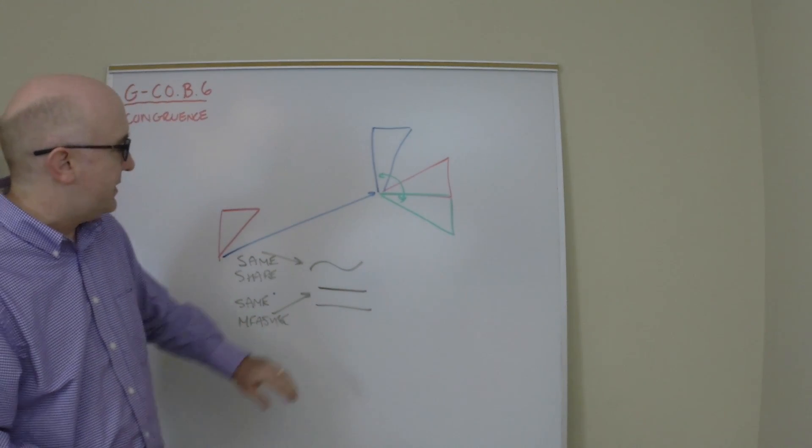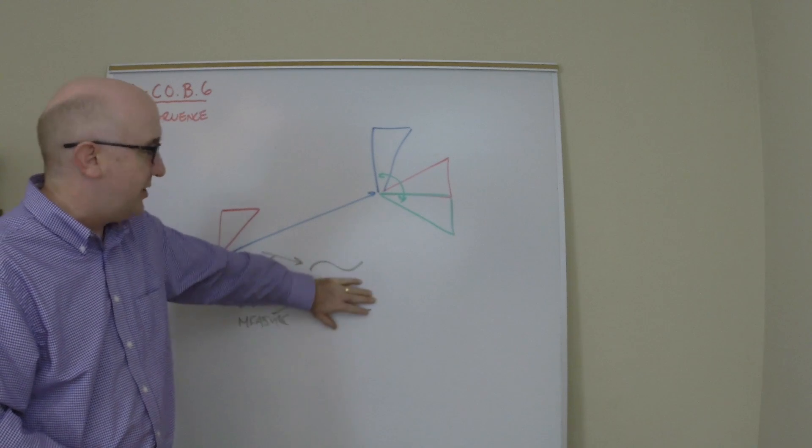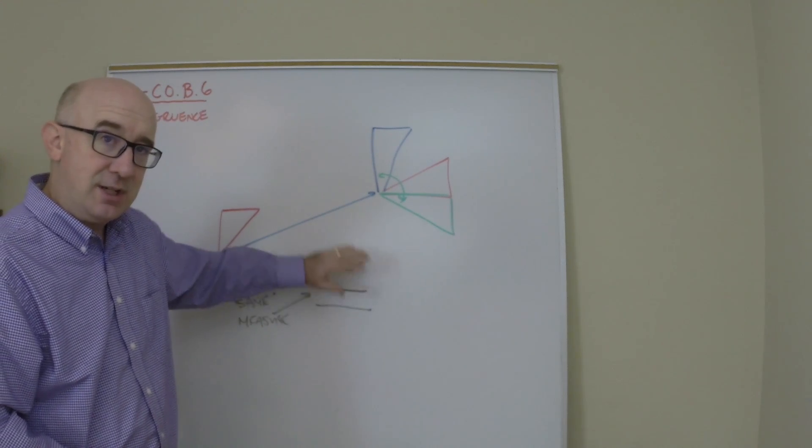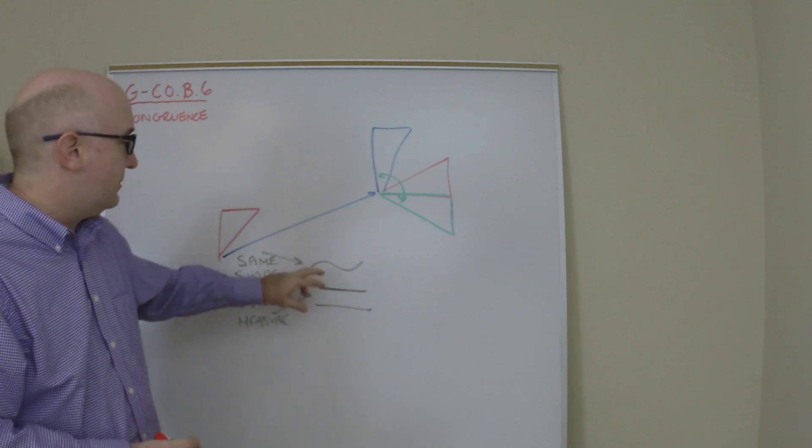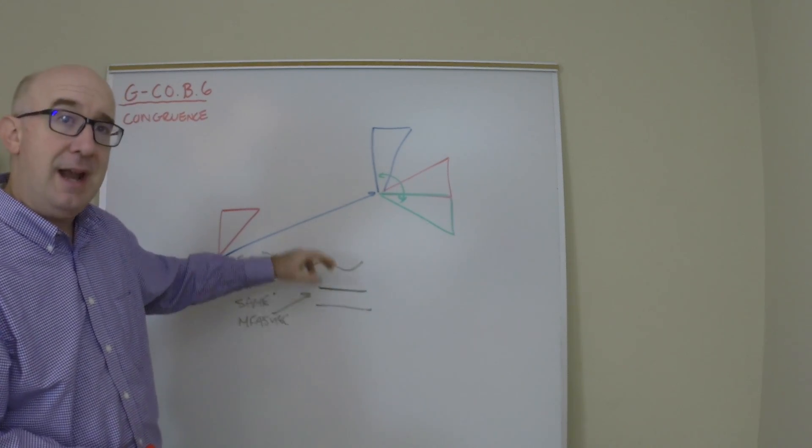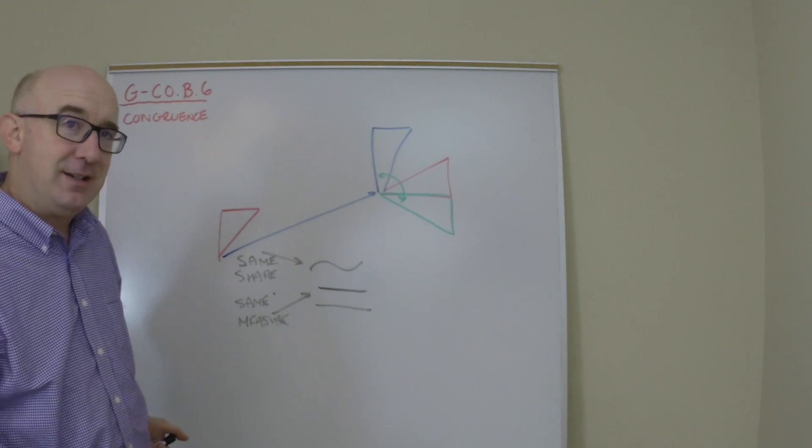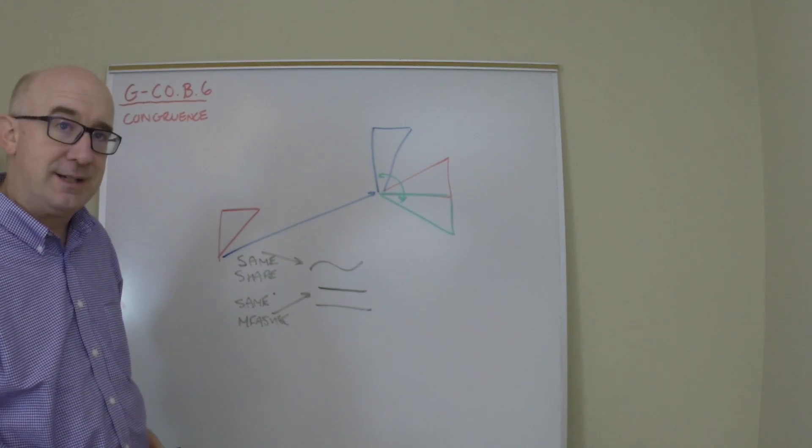Sometimes you can have just the same shape. That's called similarity. Sometimes you can just be equal. Sometimes you can be equal and have also the same shape exactly. All right, so let's take a look at a couple of examples of this.